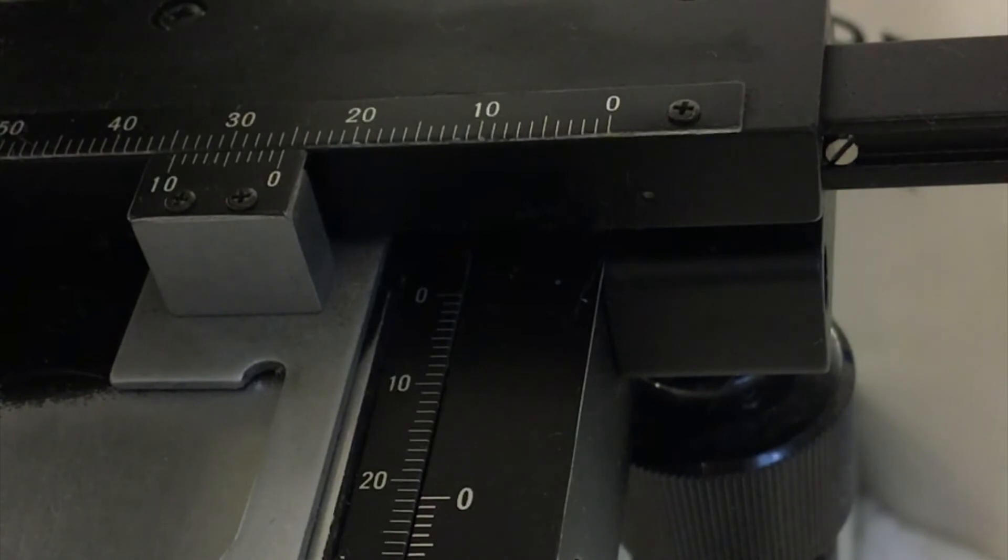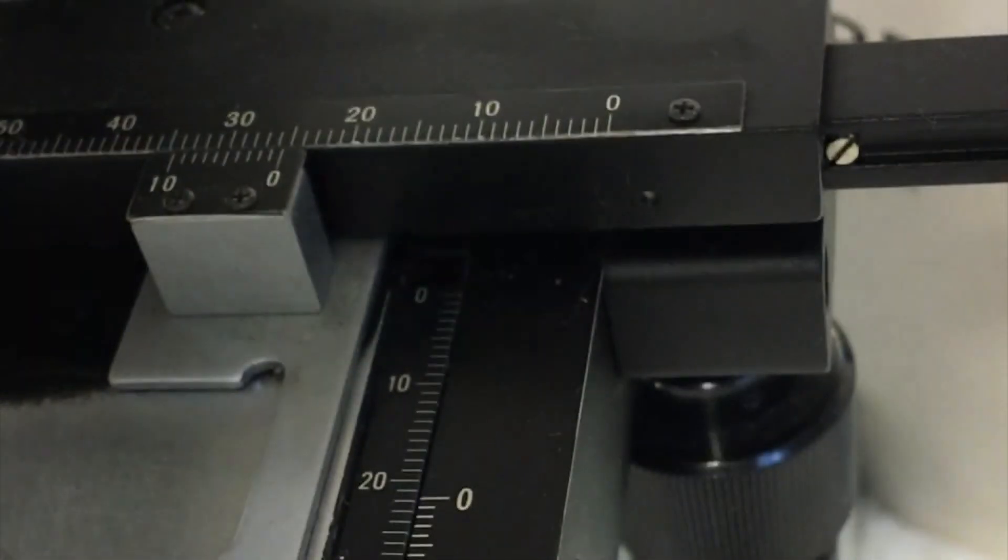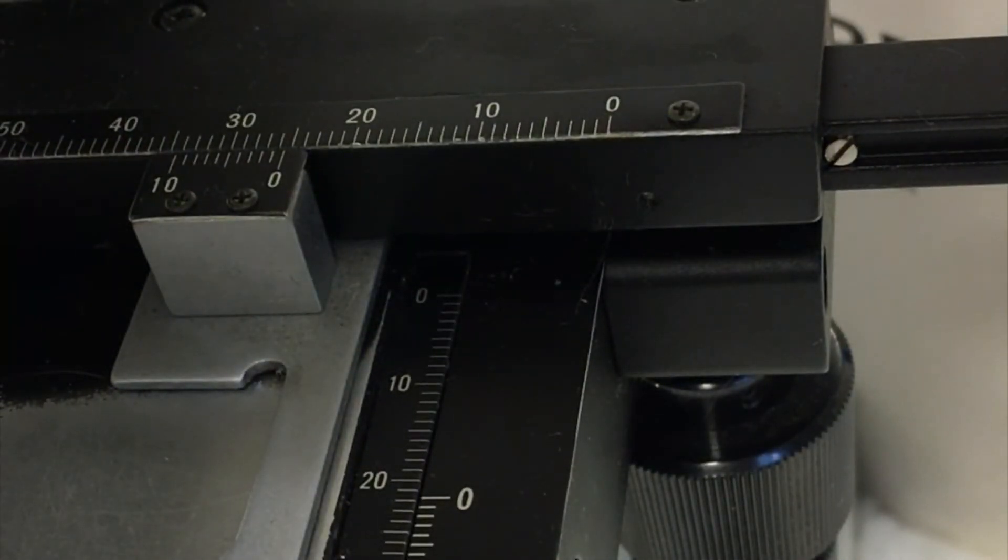And again, start where that zero is. And it's not lined up on one, two, three, four almost. But yes, it definitely looks like it's a five. So that's 25.5.